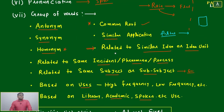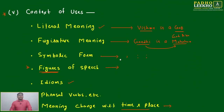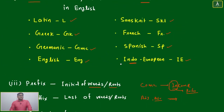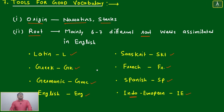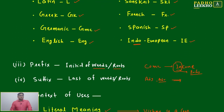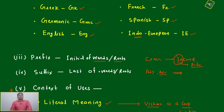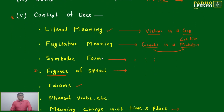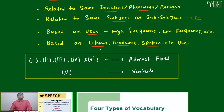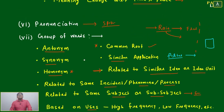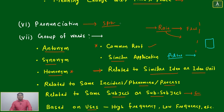Now, out of these seven points — these are tools, tools for good vocabulary. Point number one, two, three, four — meaning origin, root, prefix, and suffix — mathematically you can say these are all constants; they are not going to change much. Pronunciation is also almost fixed — it will only change if you are changing locations.